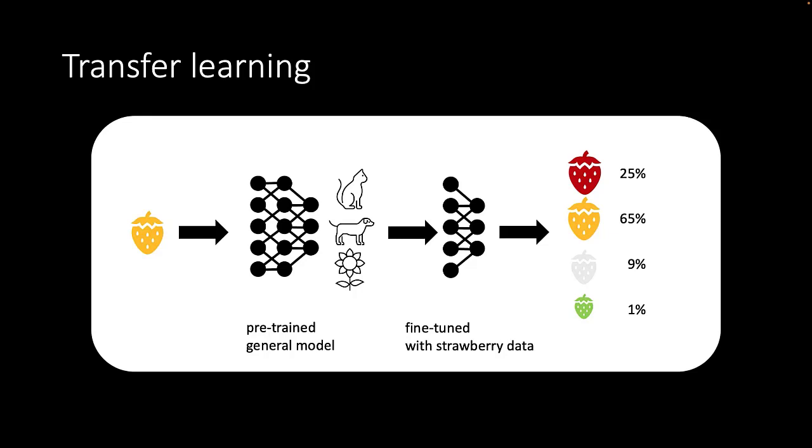This will simply be a list of numbers, but each number can be interpreted as something like the catness or dogness or flowerness or tableness of the image.